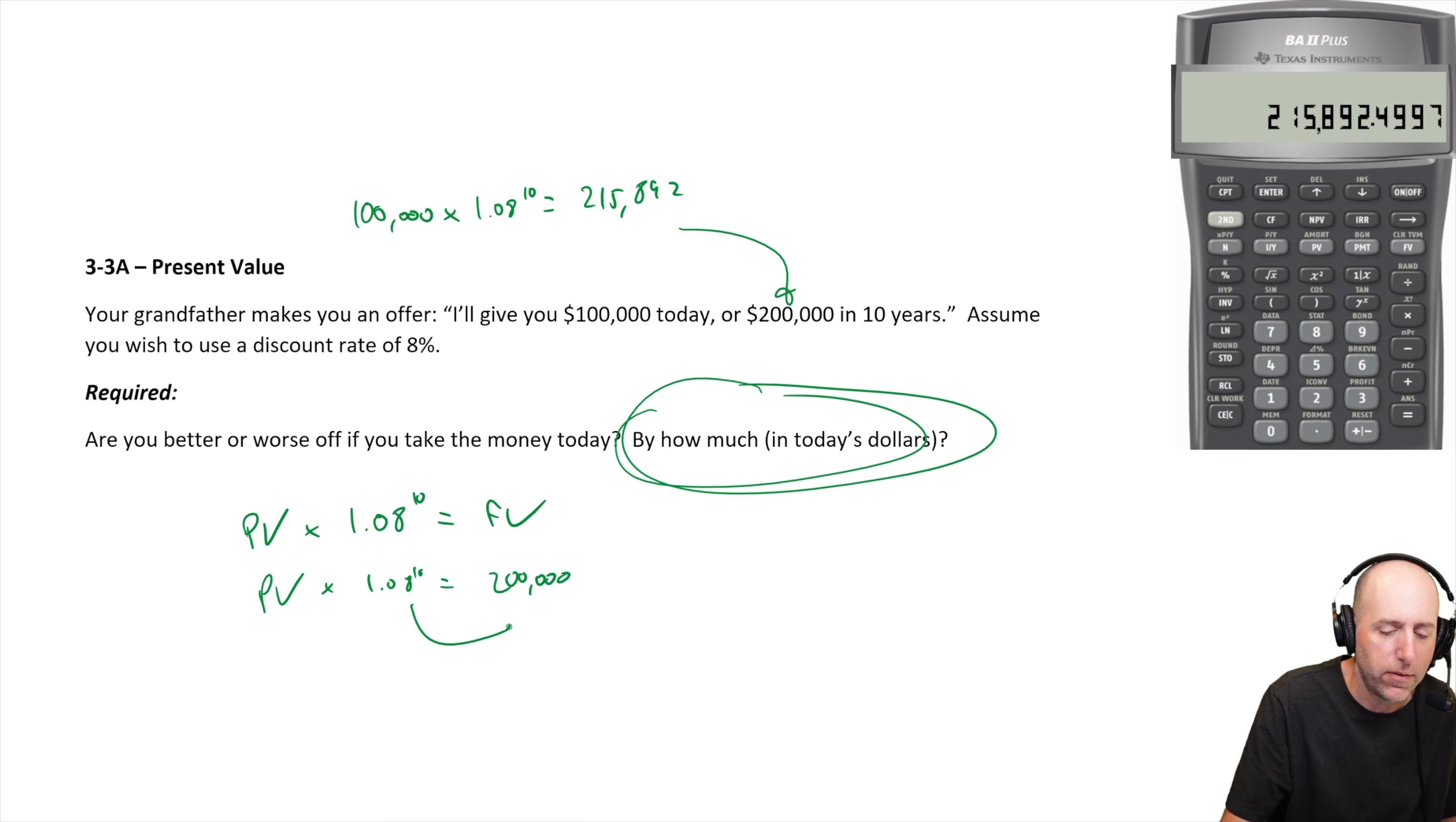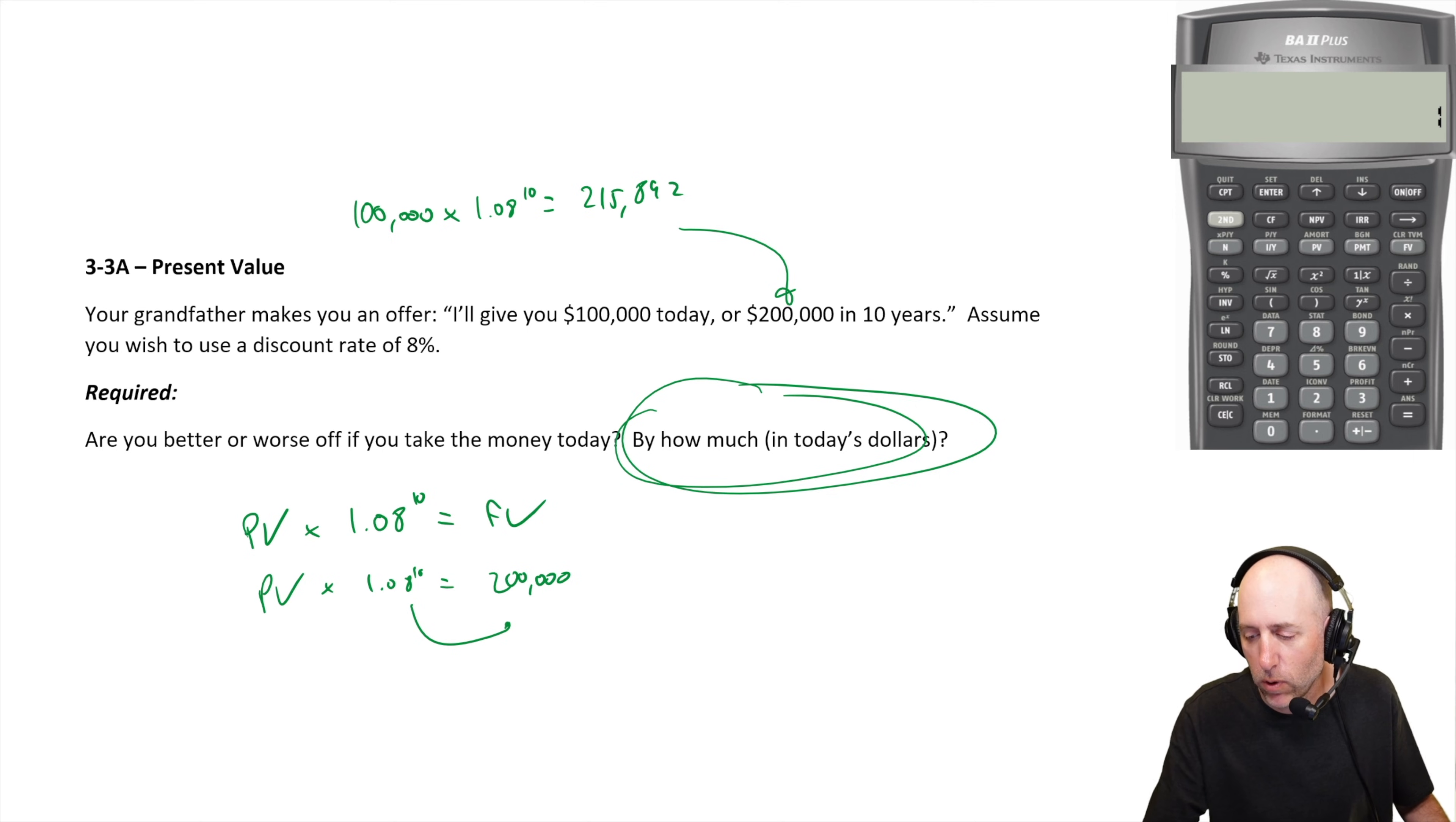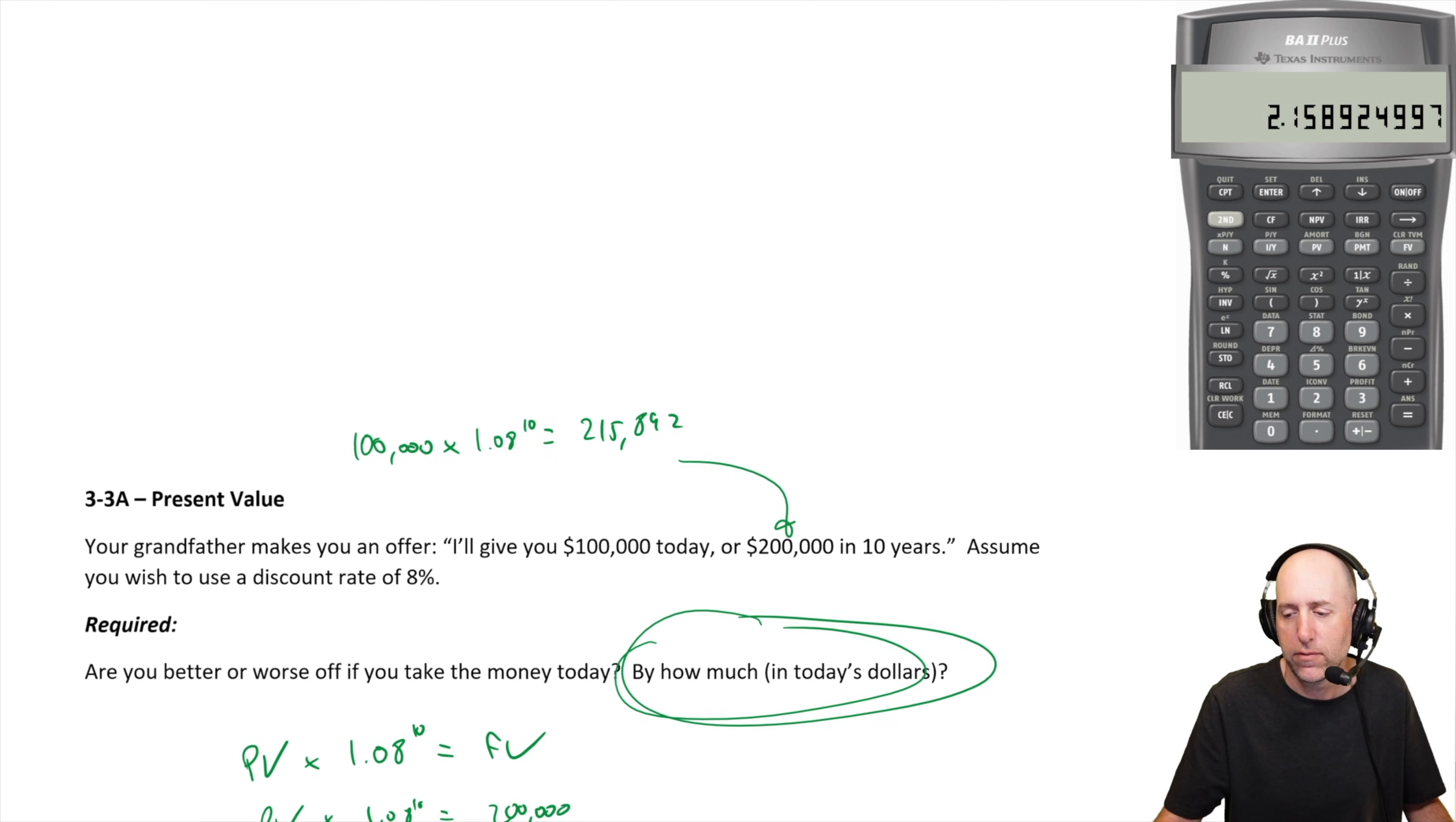To discount it back, you just divide by 1.08 to the 10. So I'm going to take 1.08 to the power of 10, 2.159.